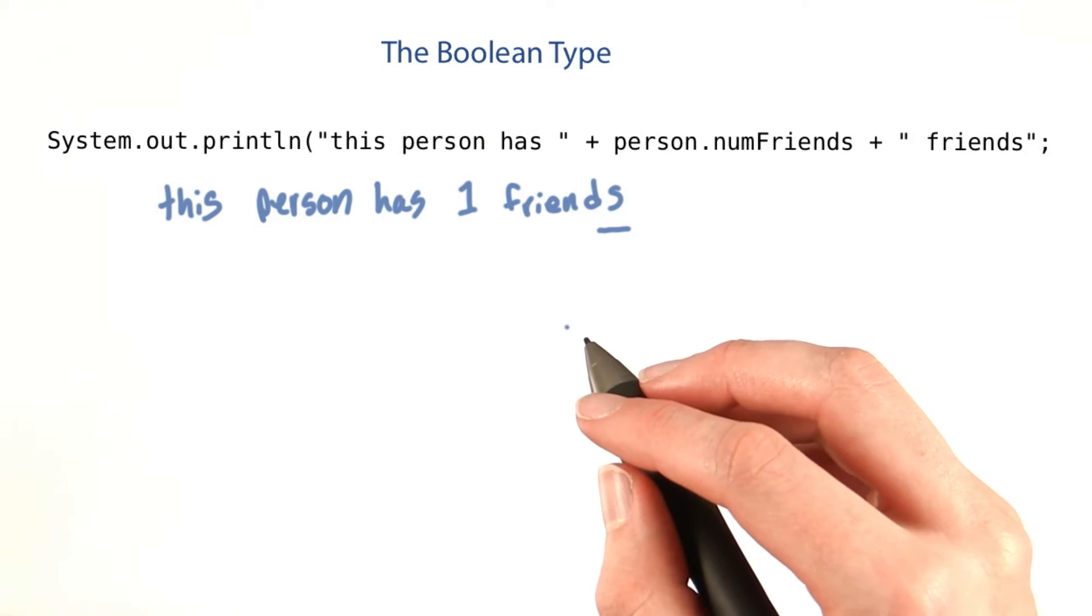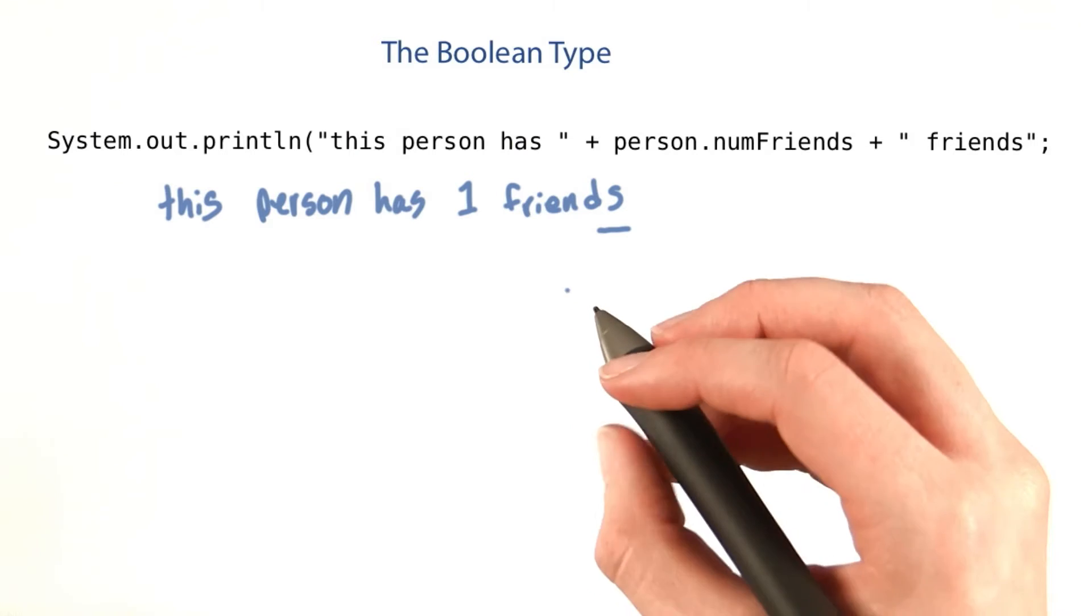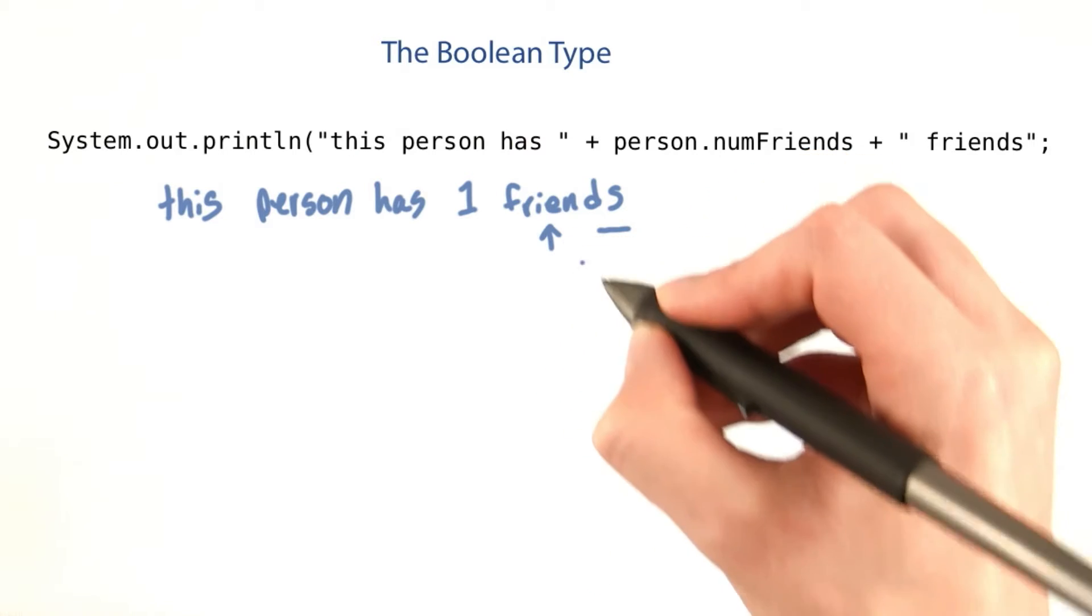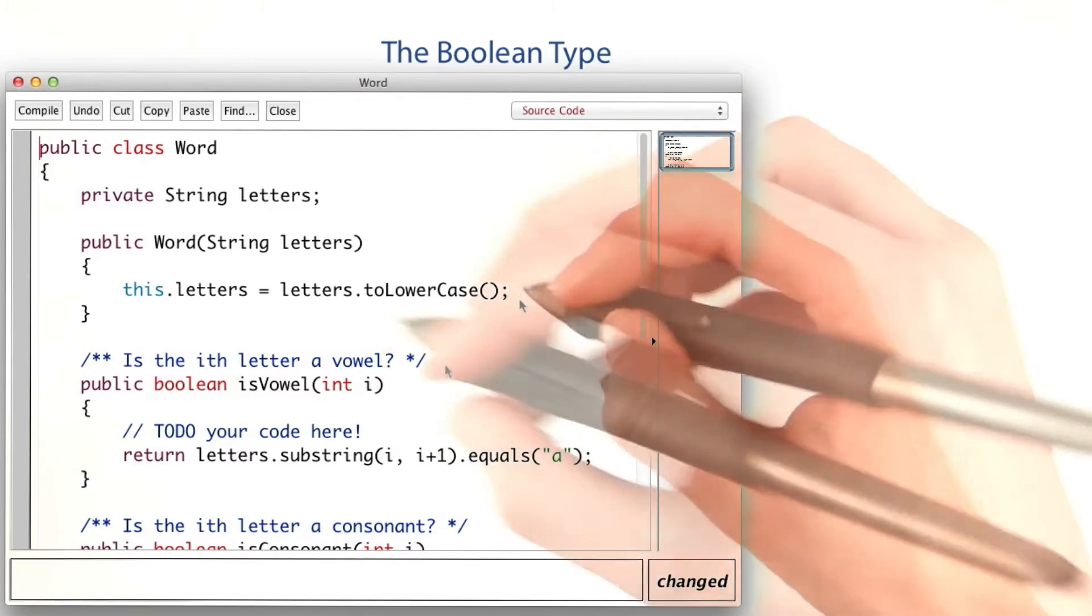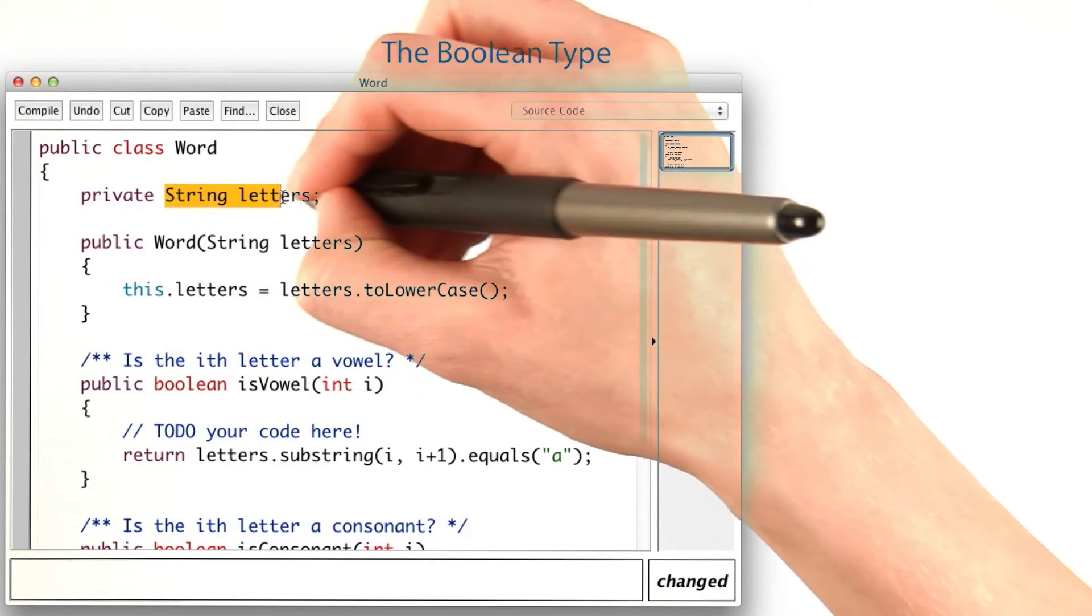But in preparation, let's write a word class with a method for figuring out if a letter is a consonant or a vowel. Here's the word class. It saves its letters in an instance variable, letters.